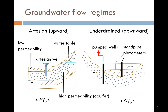Two groundwater flow regimes that can arise are artesian conditions and under-drain conditions. In artesian conditions, as illustrated on the left, the water pressure is influenced by a higher water table elsewhere, as the aquifer is confined by a layer of low permeability above. This leads to pressures which are in excess of hydrostatic, i.e. u is greater than gamma w times z.